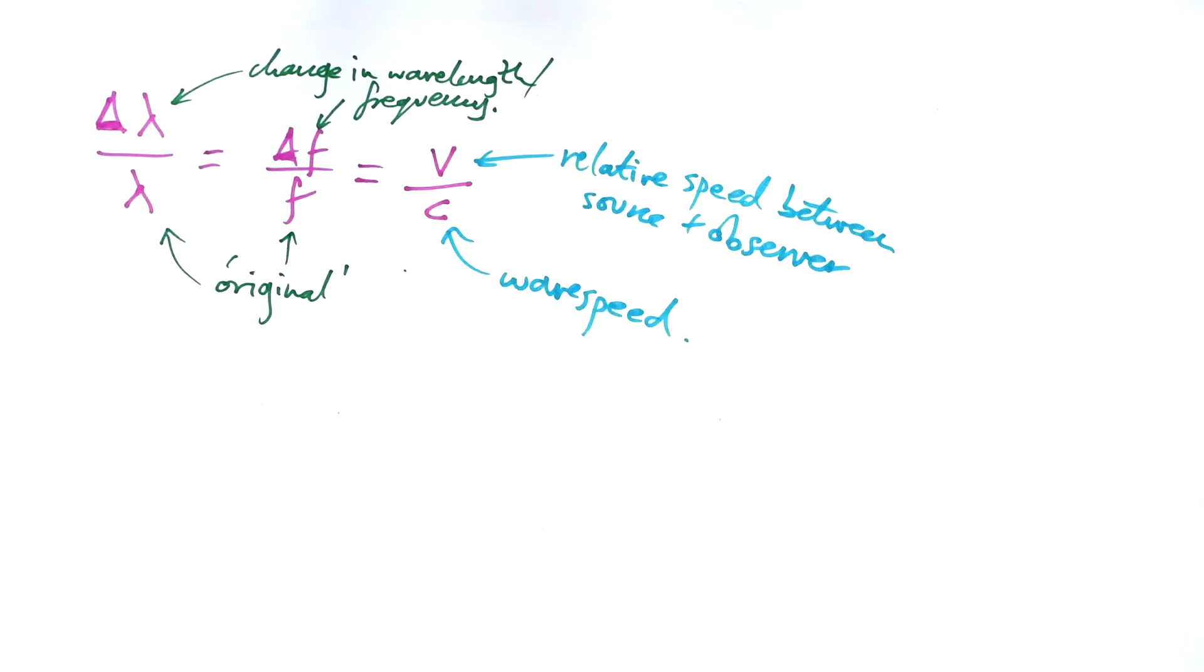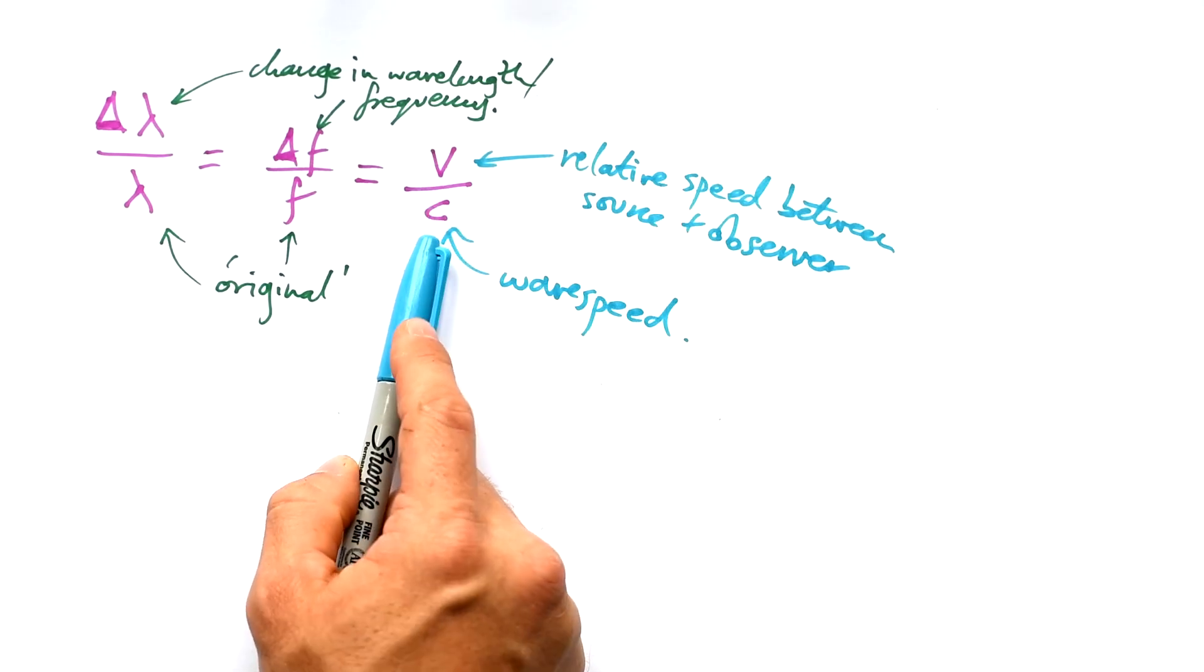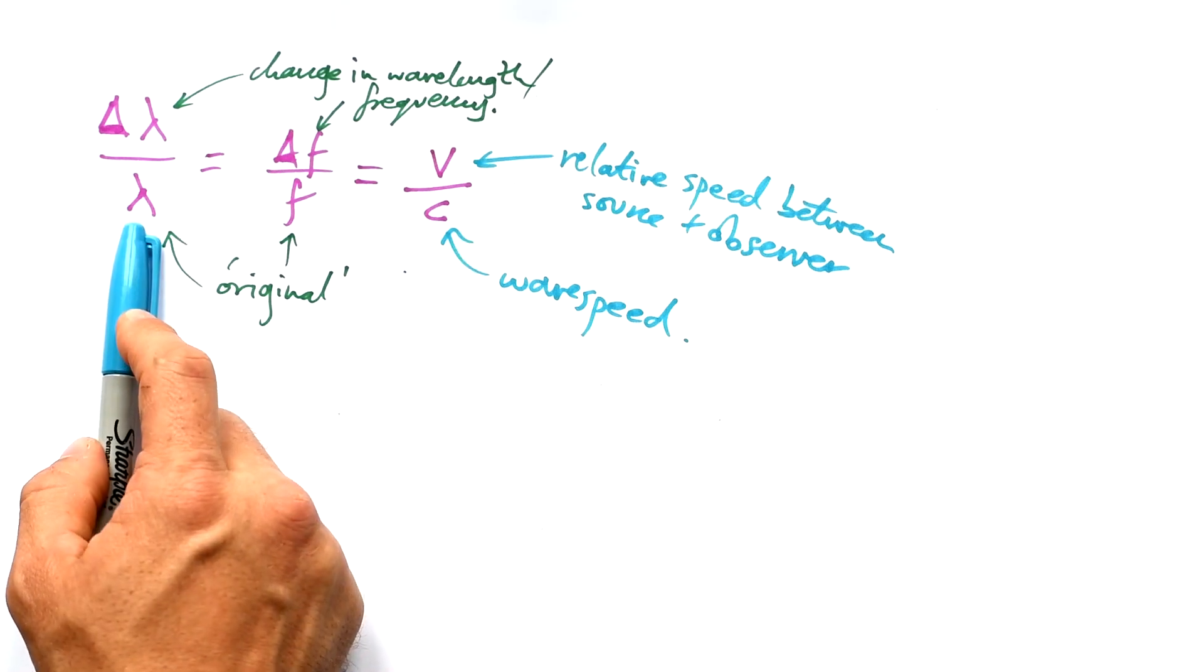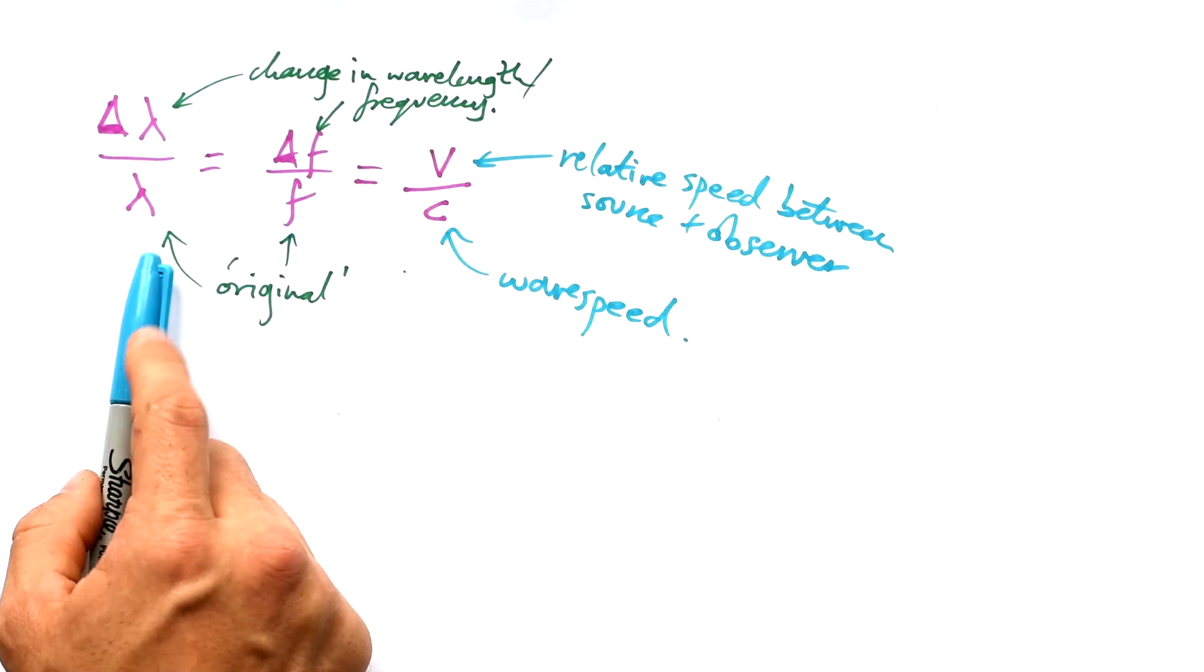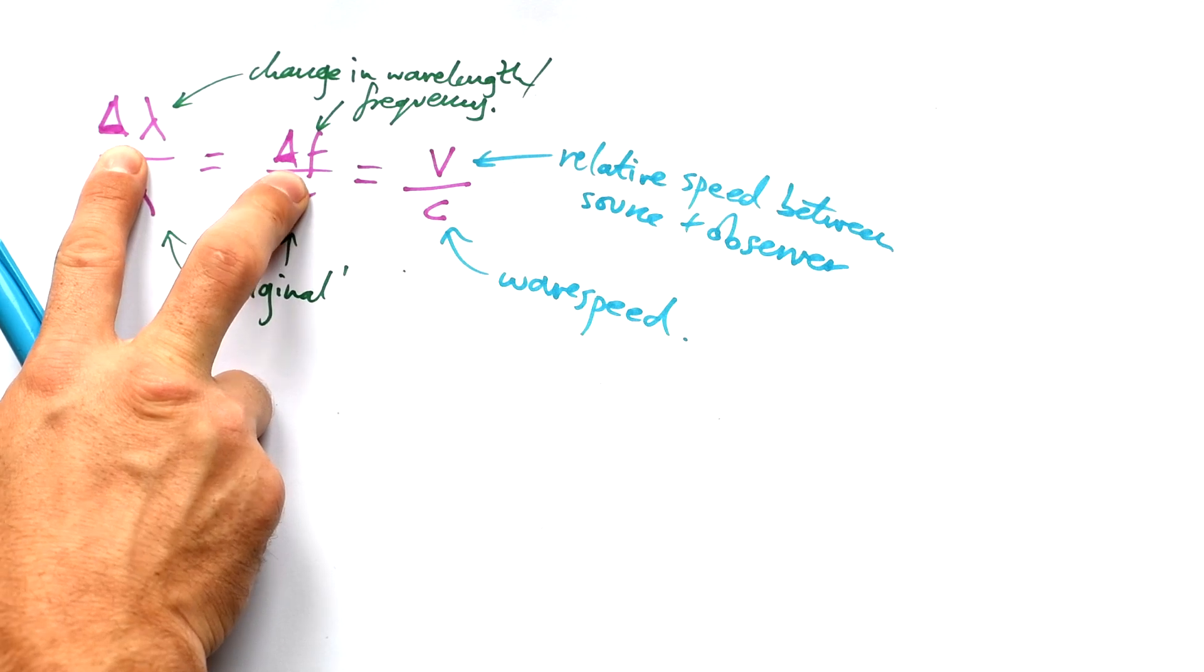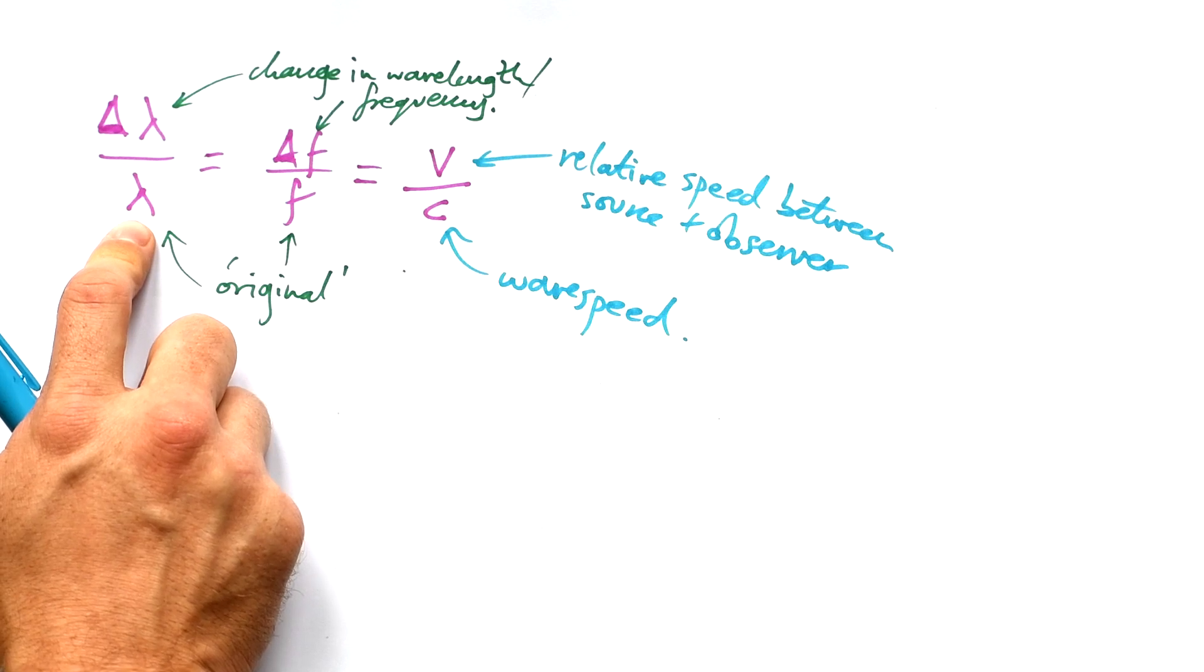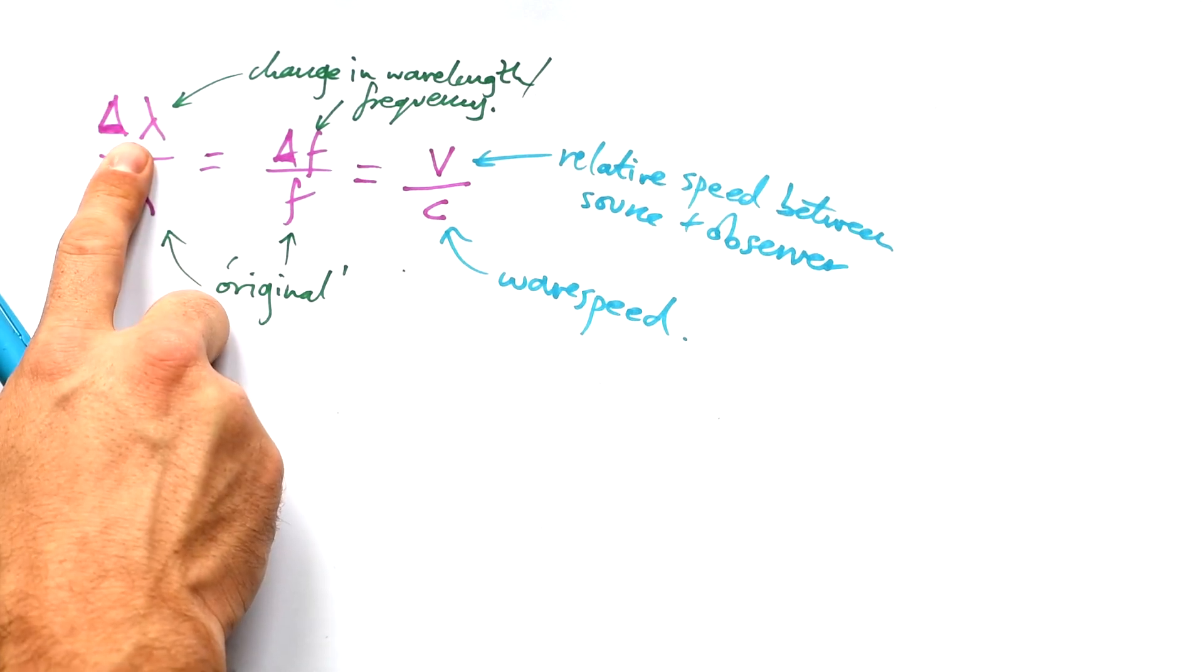So if we were looking at our ambulance, then this would be the speed at which it was going past us. This would be the speed of sound, about 300 meters per second. This would be the wavelength or the frequency of the sound being made by the siren. That's what the paramedic would hear inside the ambulance. But this up here is going to be the difference between what the paramedic hears and what we hear. So let's say it was making a 400 hertz sound, but we hear a 300 hertz sound, then that means this here would just be 100 because one take away the other.